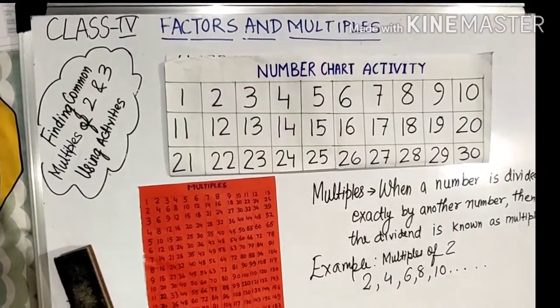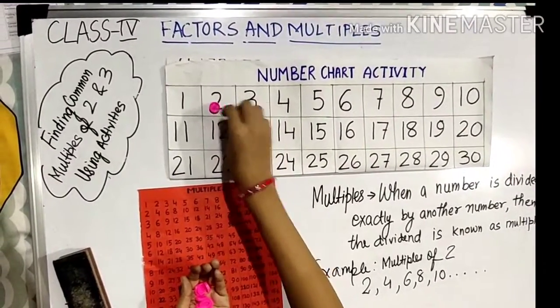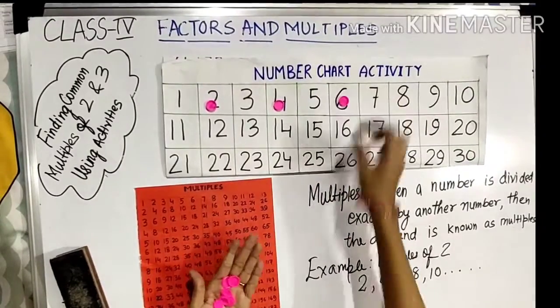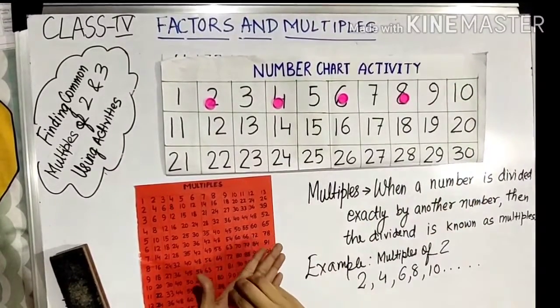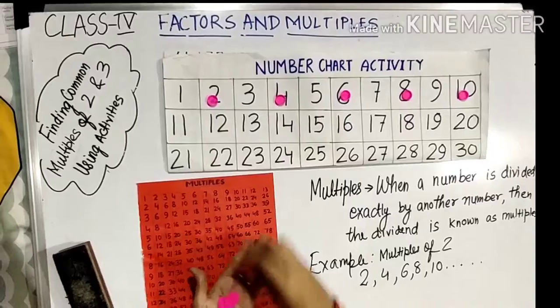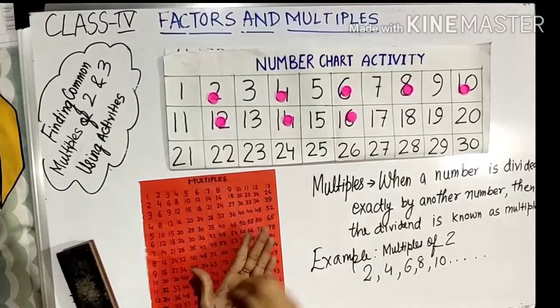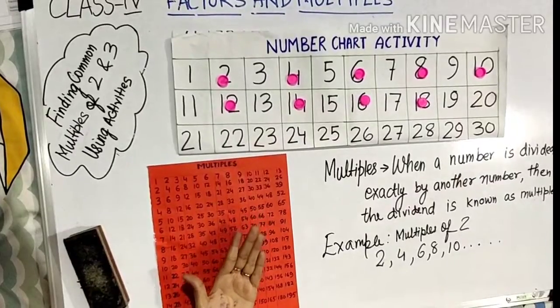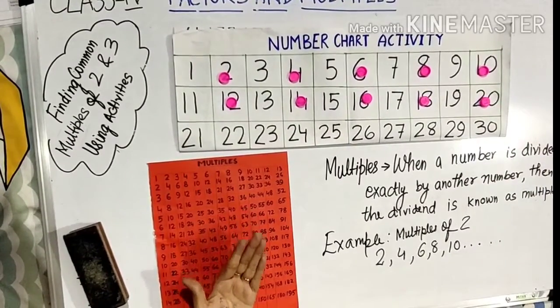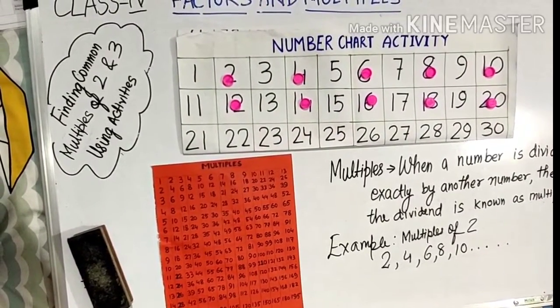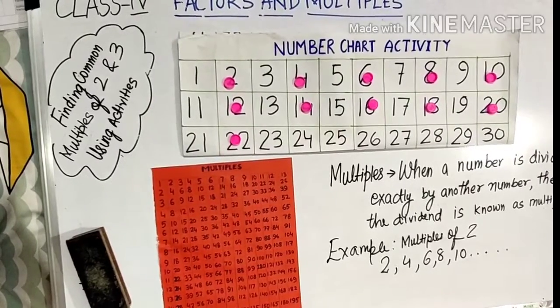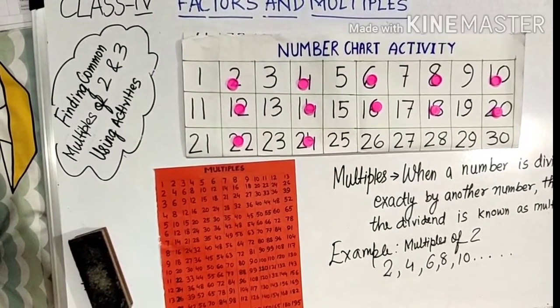Now 2 ones are 2, 2 twos are 4, 2 threes are 6, 2 fours are 8, 2 fives are 10, 2 sixes are 12, 2 sevens are 14, 2 eights are 16, 2 nines are 18, 2 tens are 20, 22. All the even numbers are divisible by 2.